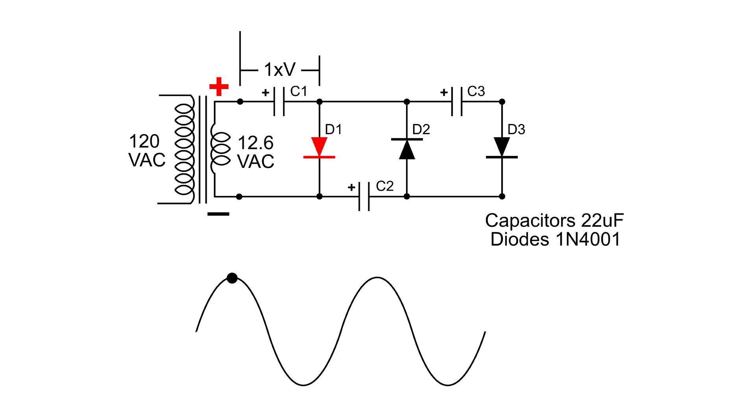When the voltage of that secondary transformer reverses and we're at the negative part of the cycle, D2 is going to conduct, charging C2. We're going to end up with 2 times V, and that's because C1 is charged and we're also getting voltage from the transformer, so it's going to be 2 times V.